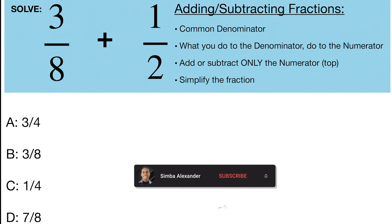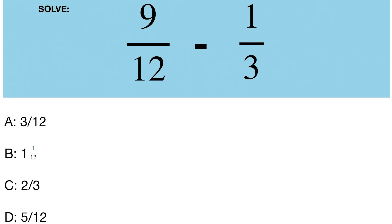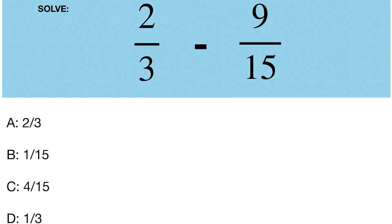3 over 8 plus 1 over 2. 9 over 12 minus 1 over 3. 2 over 3 minus 9 over 15.